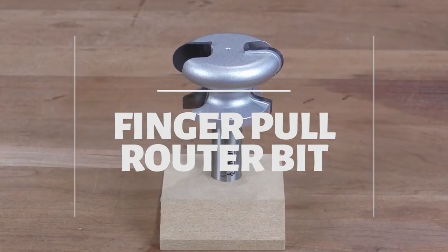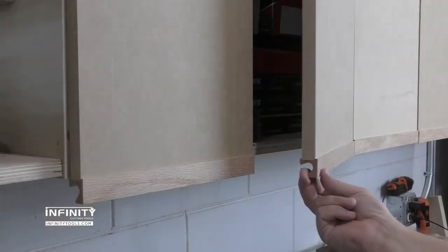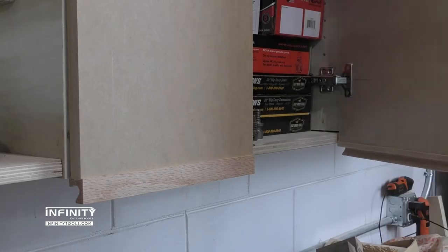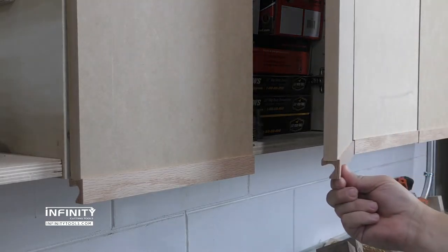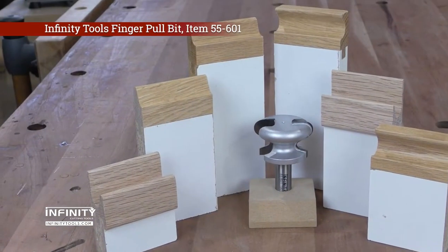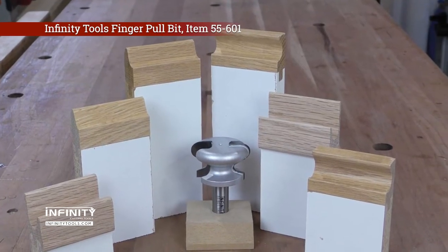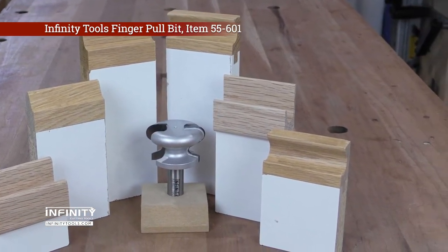The Infinity Finger Pull bit allows you to make European style moldings that replace the hardware on your doors and drawer fronts. This bit is versatile enough to allow you to create three distinct profiles in the size you need.